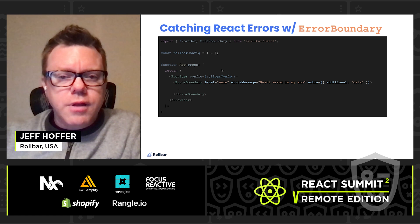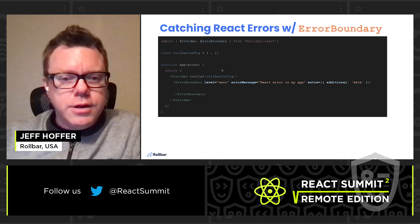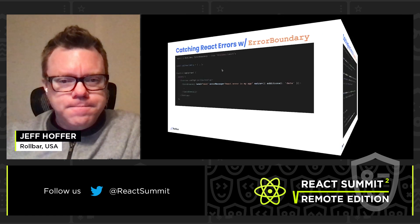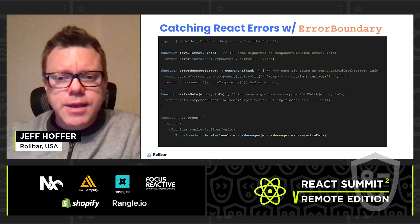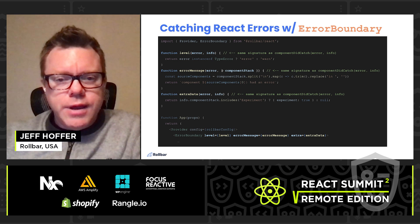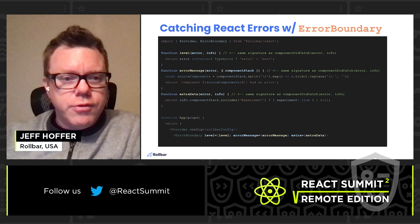The default behavior is to log everything at the error level with no additional message beyond the message from the error. But you can change the level of all logs from the error boundary, or set a specific message to be included in all logs sent by the error boundary. Additionally, you can add extra data to each log. And for the ultimate flexibility, you can provide functions to those same properties that allow total control over the behavior of the error boundary. Each function will receive the error and info with component stack that's received by the error boundary when an error is thrown.